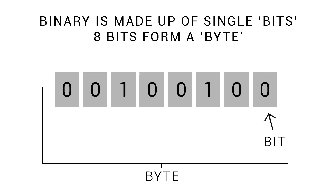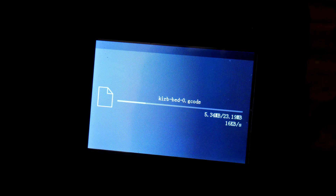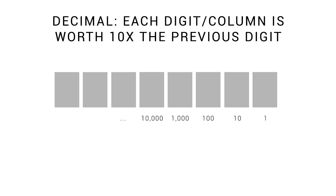A set of 8 bits is called a byte, and this is the same byte used to describe hard drive capacity — for example, 8 gigabytes — or download speed, like 500 kilobytes per second. With base 10 numbers, each new digit represents 10 more than the last. We have a ones column, a tens column, hundreds column, thousands column, and so on.